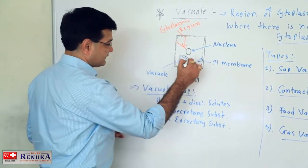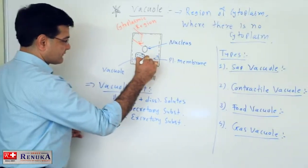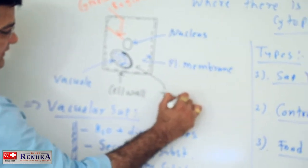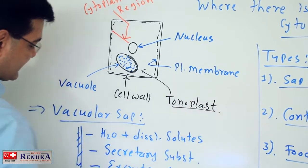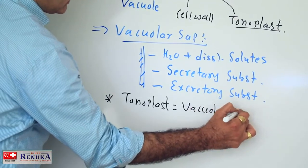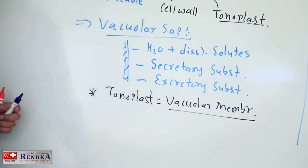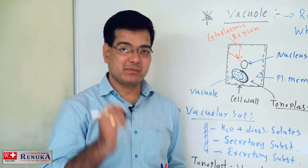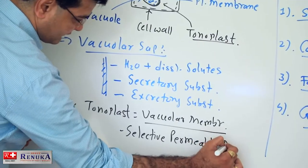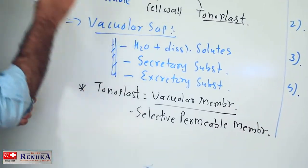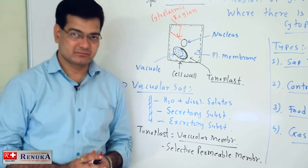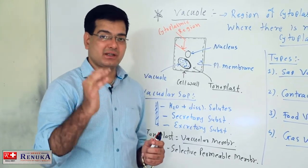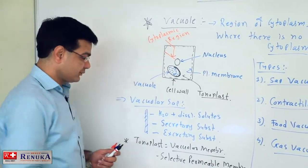The outer membrane of the vacuole is tonoplast. Tonoplast is the vacuolar membrane. This tonoplast has a specific characteristic, and it is that it is a selectively permeable membrane. This tonoplast, or the selectively permeable membrane, allows the movement of water and some selective solutes across it. That is why it is a selectively permeable membrane.